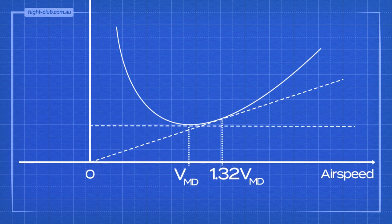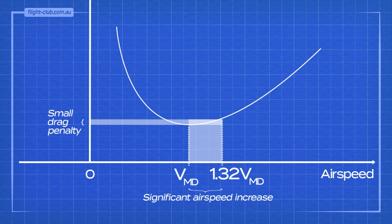The drag curve is relatively flat at the bottom. From minimum drag speed, the airspeed may be increased significantly with only a small drag penalty. While drag increases a little, the airspeed increases significantly, and this is good for maximum range. Consequently, the overall effect is an increase in specific range. Maximum range occurs at 1.32 times minimum drag speed.